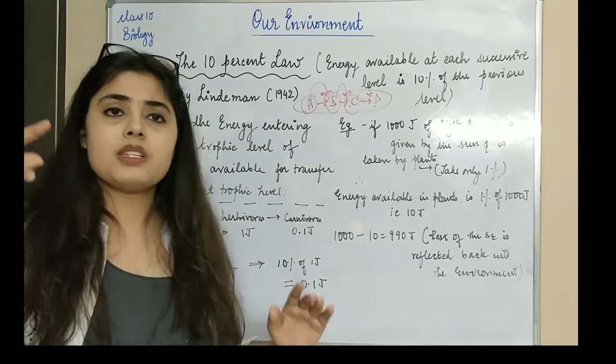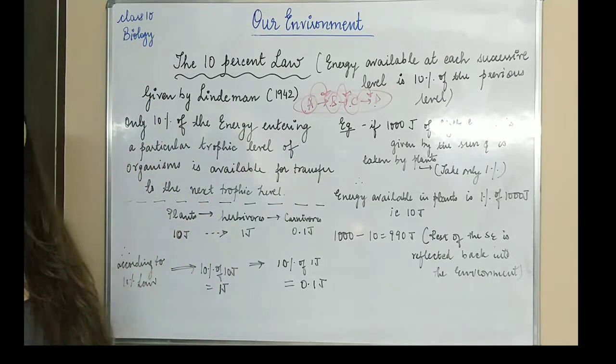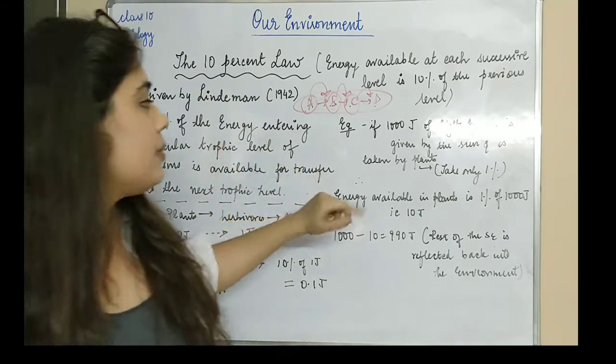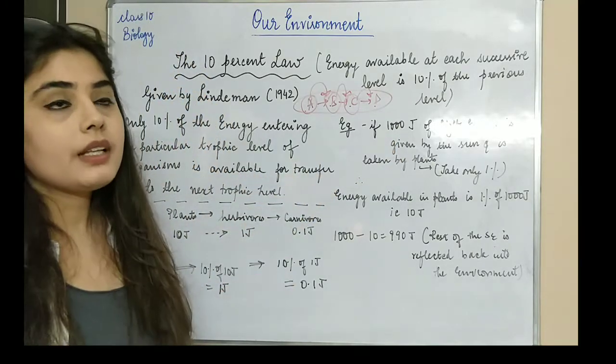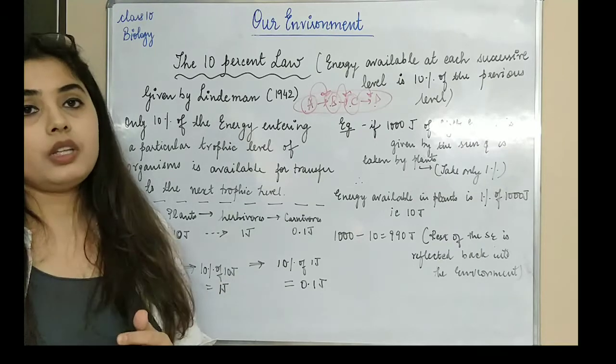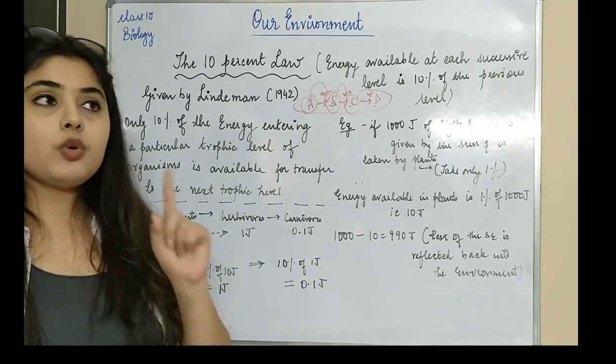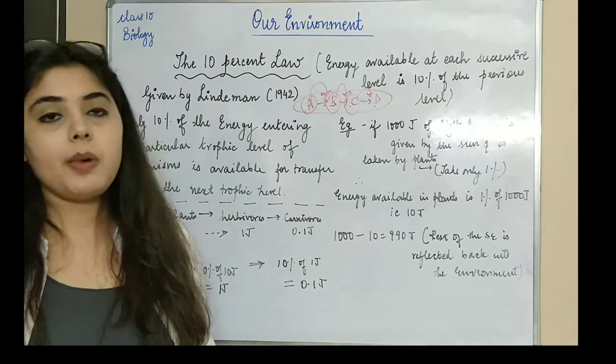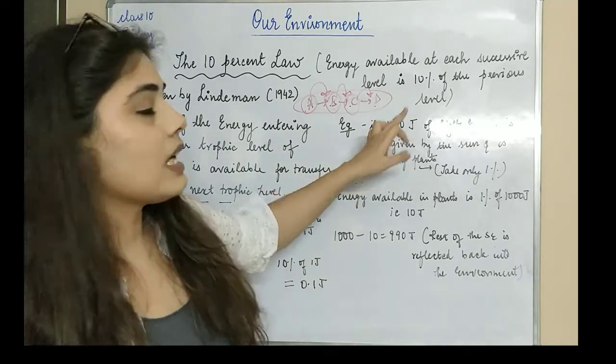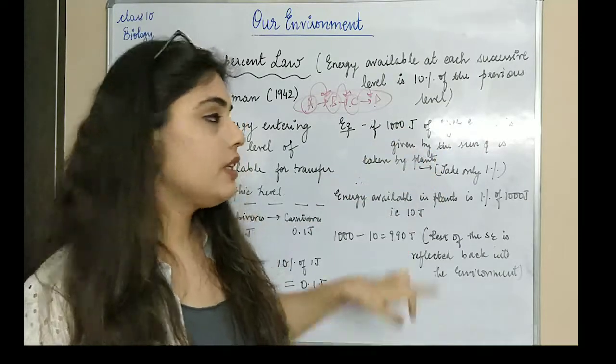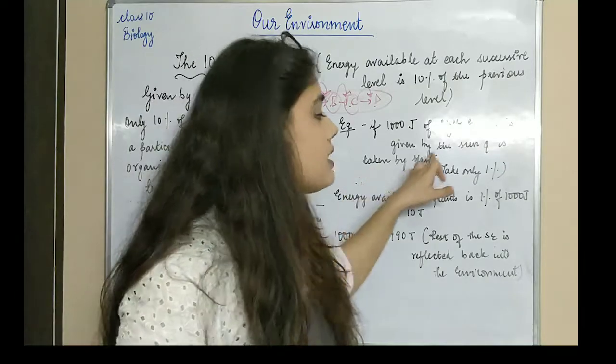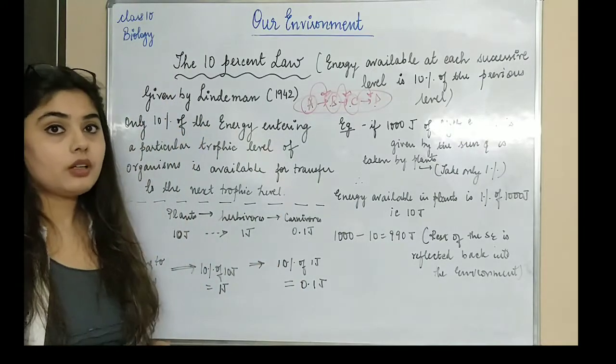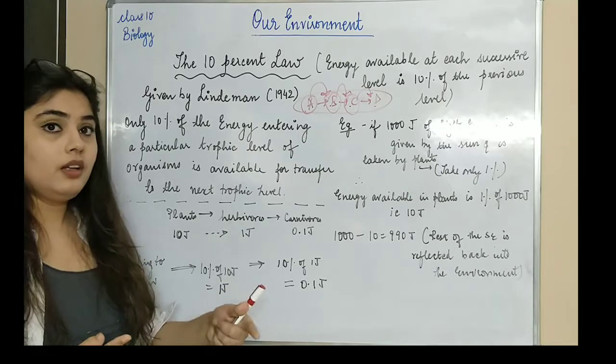This is what is the energy level transfer, also called the 10% law. For example, in the previous video we also mentioned that plants absorb sunlight, but they absorb only 1% of the sunlight. Only 1% of the sunlight is being absorbed and utilized by the plants. So if the sun is giving us 1000 joules of light energy, plants take just 1% of that.